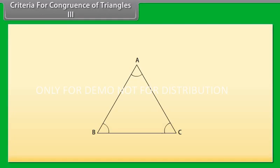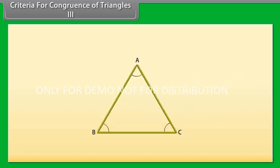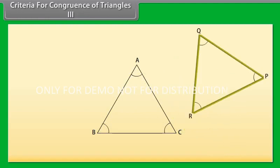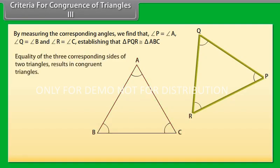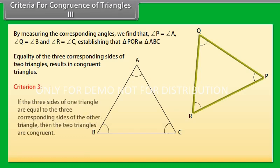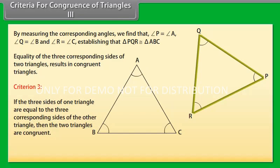Criteria for congruence of triangles 3. In order to explore another criterion, we again take a triangle ABC. Now take three thin sticks equal in length to sides AB, BC, and CA of triangle ABC. Place them in any order to form triangle PQR near triangle ABC. By measuring the corresponding angles, we find that angle P equals angle A, angle Q equals angle B, angle R equals angle C, establishing that triangle PQR is congruent to triangle ABC. This means that equality of the three corresponding sides of two triangles results in congruent triangles. Thus we have Criterion 3: if the three sides of one triangle are equal to the three corresponding sides of the other triangle, then the two triangles are congruent. This is referred to as SSS — side-side-side congruence rule.